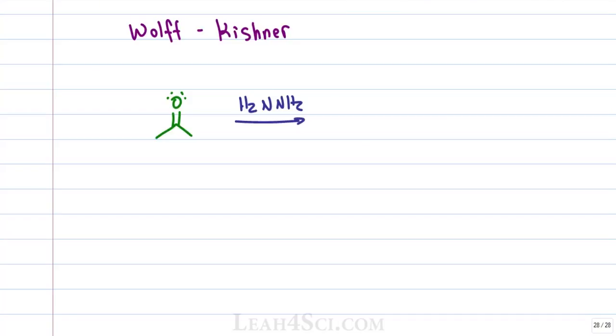Since this reaction is under basic conditions, expect to have O minuses but no positive oxygens present. Nitrogen as a base can be positive as the conjugate acid because it's much weaker than a positive oxygen.